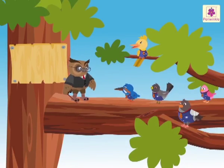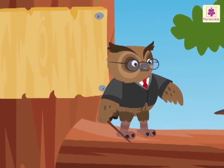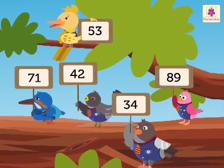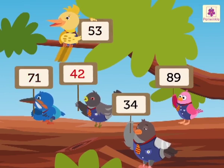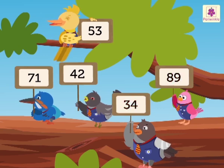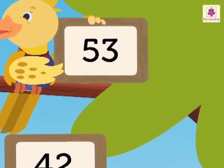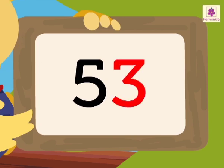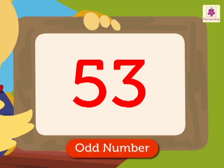Now, let's try to find out some odd and even numbers from the given numbers. Look at the numbers 53, 71, 42, 34, 89. First, let us look at the number 53. Here, the number 3 is in the 1's place. So, 53 is an odd number.